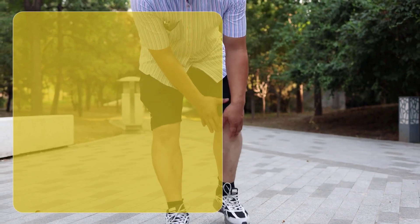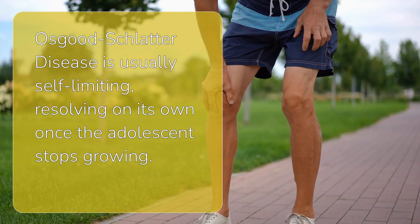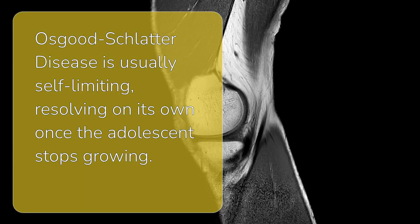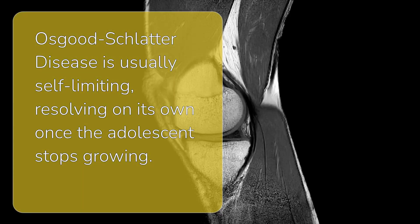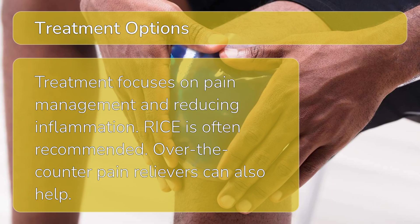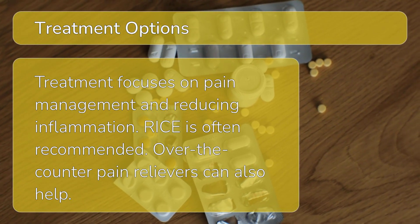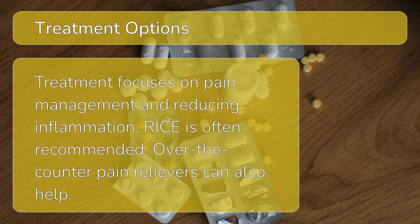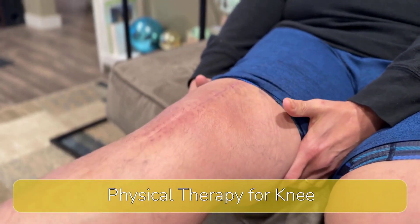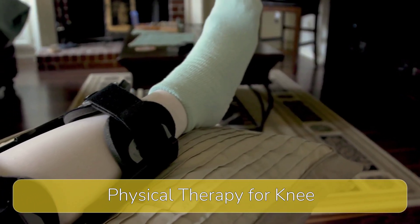The good news is that Osgood-Schlatter disease is usually self-limiting, meaning it typically resolves on its own once the adolescent stops growing. Treatment focuses on pain management and reducing inflammation. Rest, ice, compression, and elevation — RICE — are often recommended. Over-the-counter pain relievers like ibuprofen or naproxen can also help.